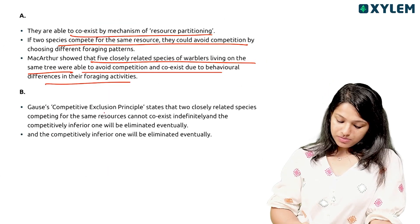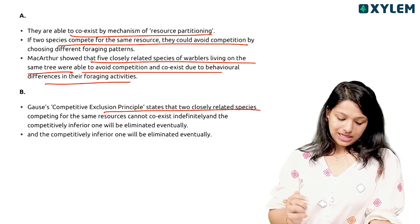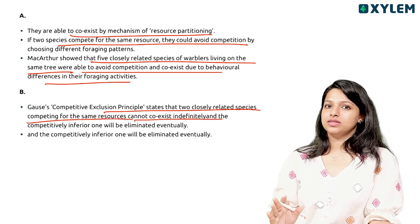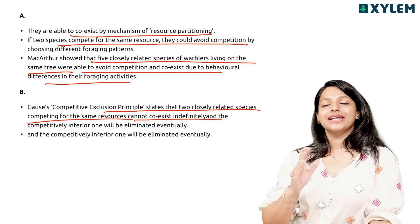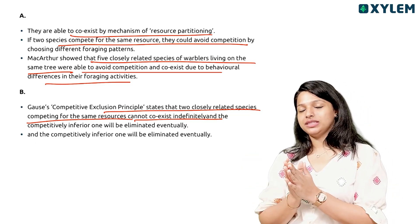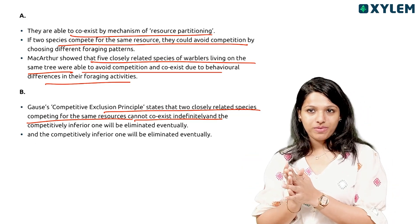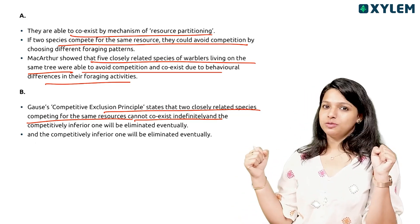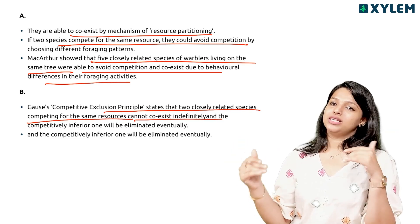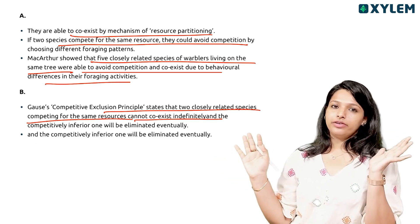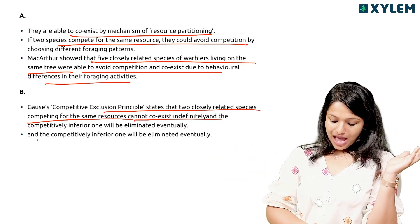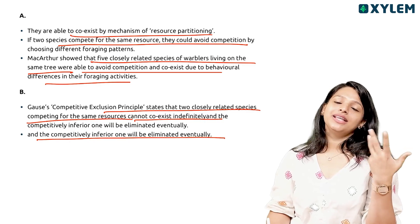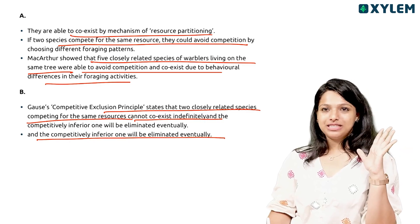Gause's competitive exclusion principle states that two closely related species competing for the same resources cannot coexist indefinitely. The competitively superior species will outcompete and sustain itself while the competitively inferior species is eventually eliminated.